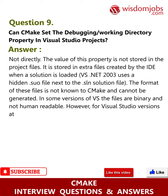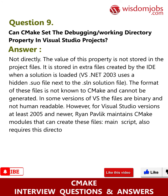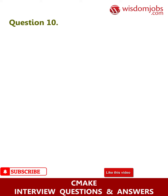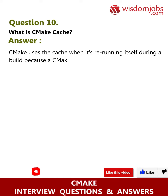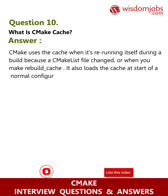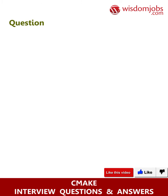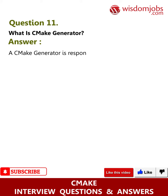In some versions of Visual Studio the files are binary and not human readable. However, for Visual Studio versions 2005 and newer, Ryan Pavlik maintains CMake modules that can create these files. Question 10: What is the CMake cache? Answer: CMake uses the cache when re-running itself during a build because a CMakeLists file changed, or when you run cmake --rebuild_cache. It also loads the cache at the start of a normal configure run.